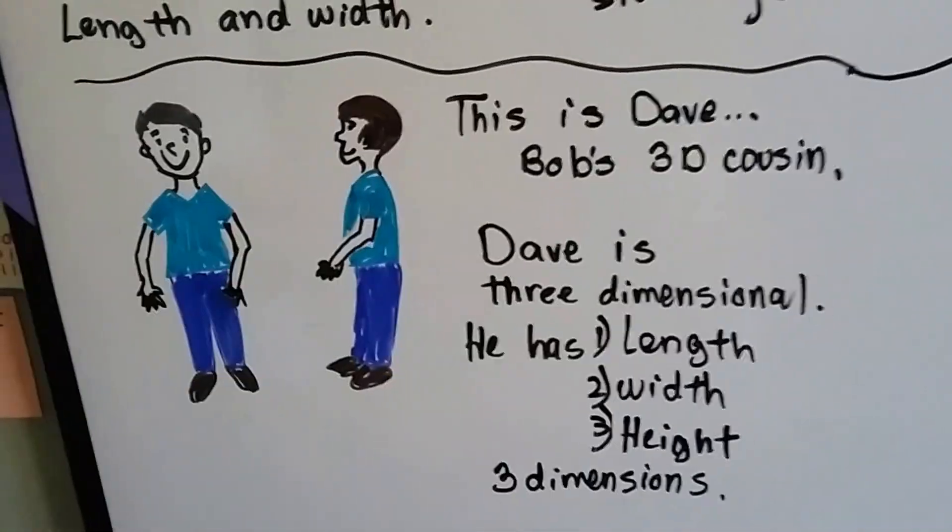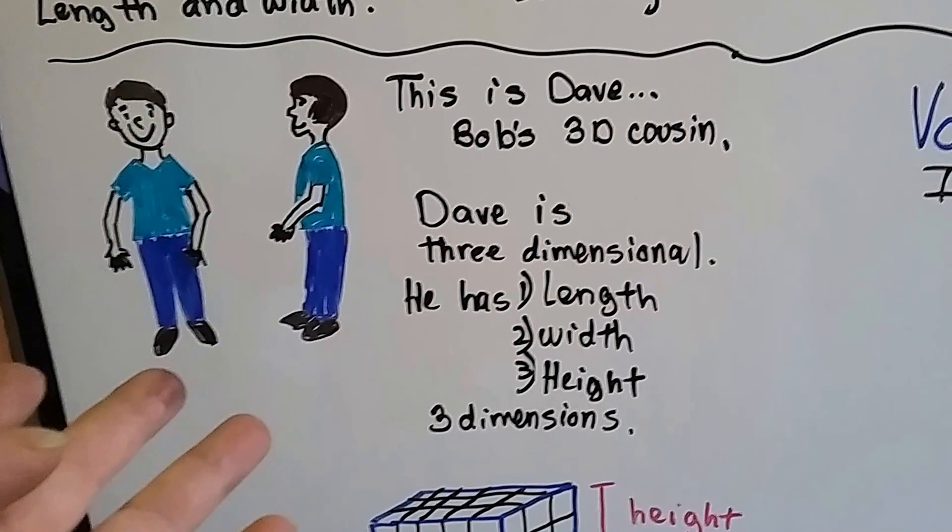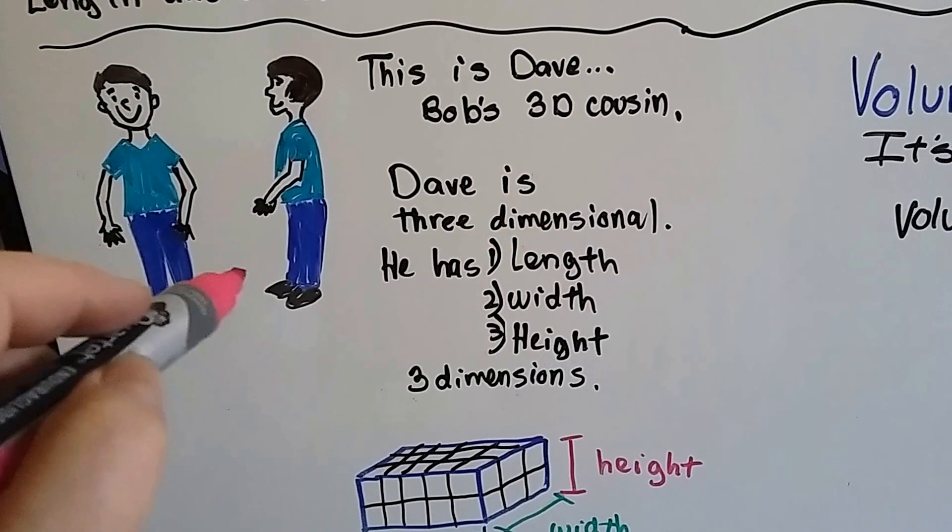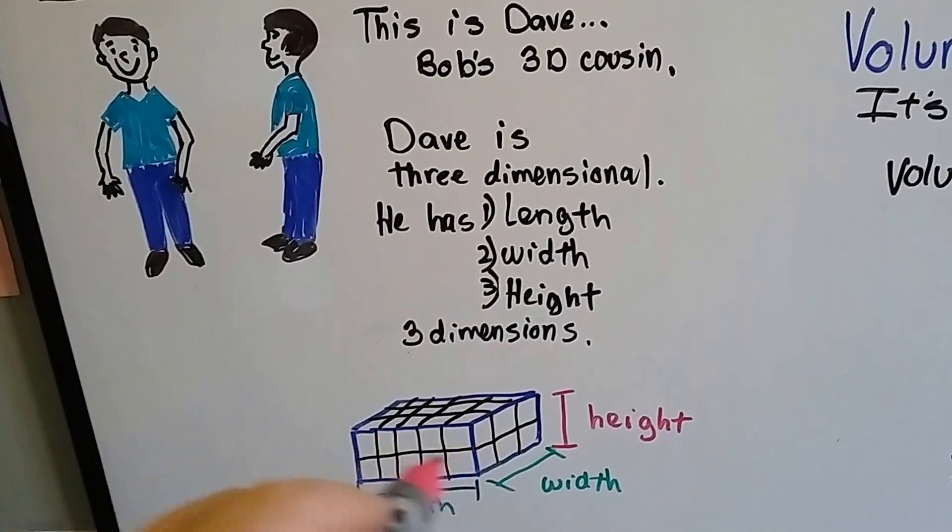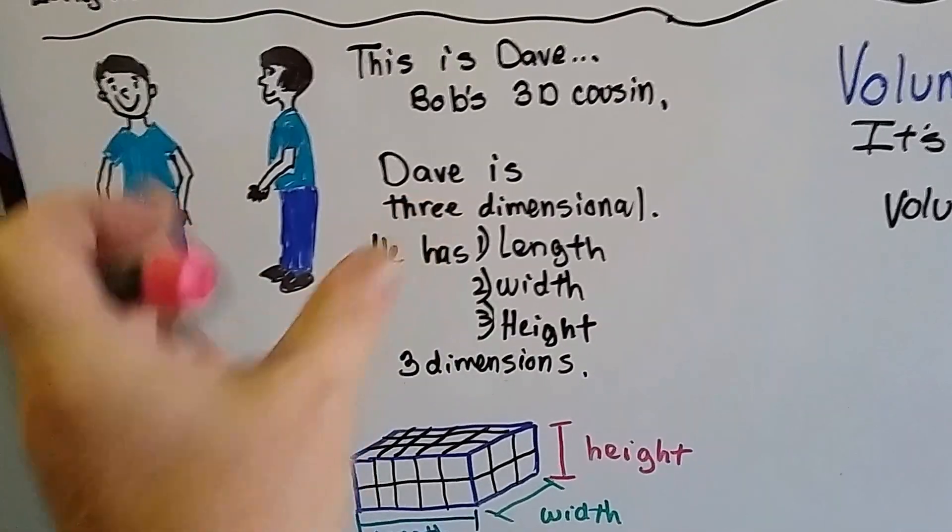All right. I don't know if you remember also that this is Dave, this is Bob's cousin. He's 3D. Dave is three-dimensional. He has length, width, and height. So he's fat. He's thick. When he turns sideways, we do see him because he's got a thickness to him.